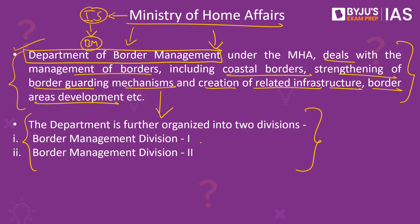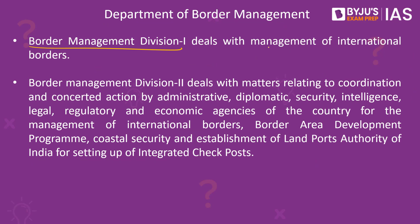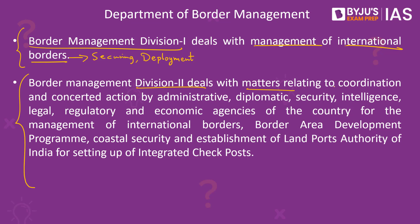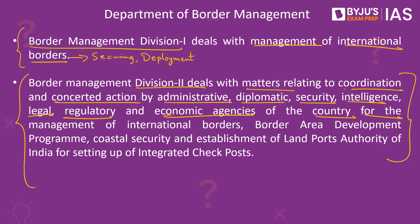Under the department, two dedicated divisions have been constituted — Border Management Division 1 and Border Management Division 2. Division 1 is responsible for managing and securing the international borders, including the deployment of border guarding forces along India's international boundaries. Division 2 is responsible for coordination and concerted action by various institutions of the central and state governments, which includes administrative, diplomatic, security, intelligence, legal, regulatory, and economic agencies involved in border management.